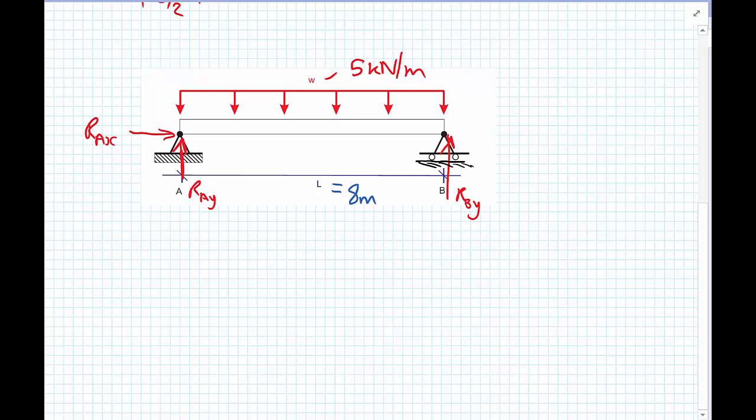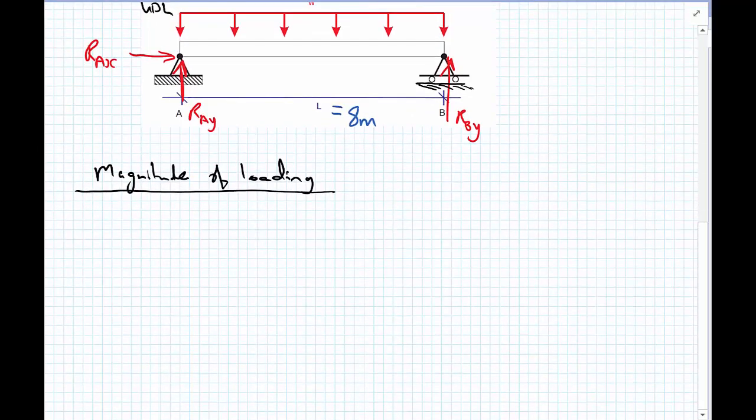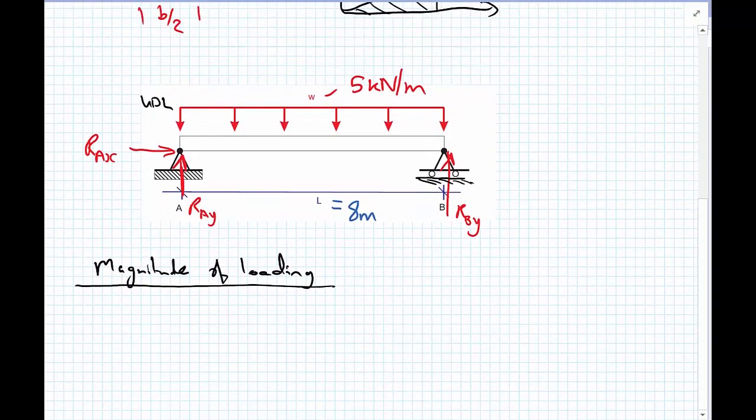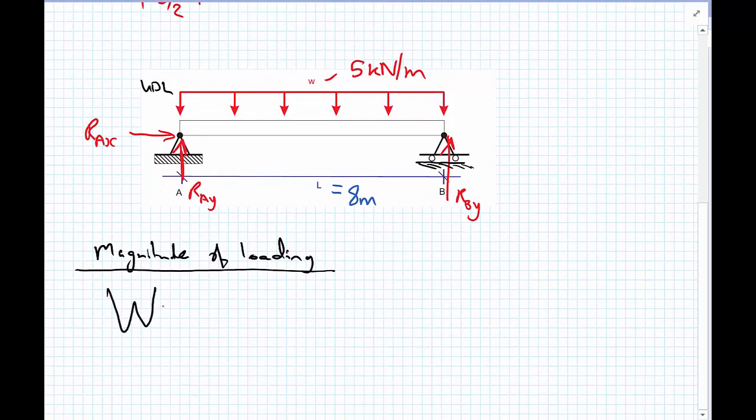So, we'll find out what the total magnitude of the load coming from this UDL is. So, magnitude of the loading. So, we have, we can imagine that the total load, and I'm going to use a capital W, equals the load intensity little w, multiplied by the total length over which this is applied, in which case this is the full length of the beam.